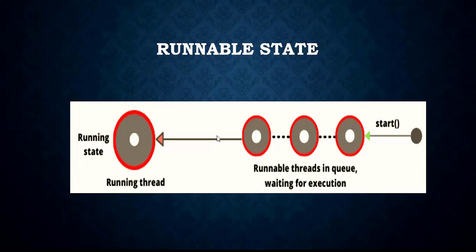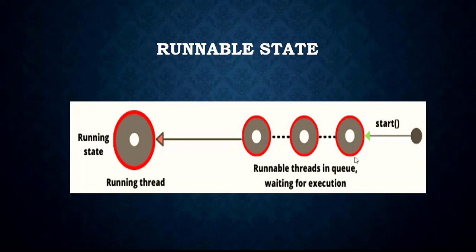When the start method is called on a new thread, the thread enters into the Runnable state. Initially the thread is created — we call that the Newborn thread — then we call the start method so it enters the Runnable state. Note that calling start does not immediately put it in the Running state; the Runnable state is the state before Running. For example, if three threads are created and start is called on all three, they queue up in the Runnable state before entering the Running state.